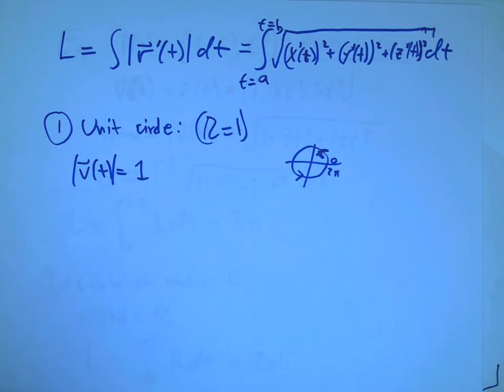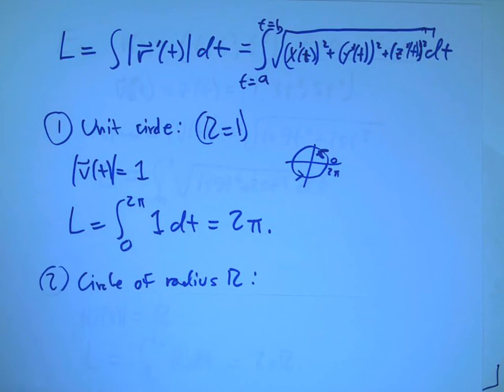So let's do a couple examples of that. Unit circle: cosine and sine, r equals 1. We pretty much know what we're supposed to get. It's beautifully simple. The speed is 1. We integrate the speed equal to 1 from 0 to 2π, and we get 2π. Nice.